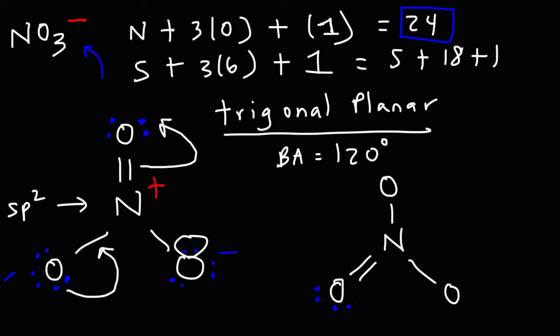So now this oxygen has two lone pairs. The one on top has three lone pairs and a minus charge. So this is another way in which we can represent the Lewis structure of the nitrate ion. These two are resonance structures and they're exactly equal.